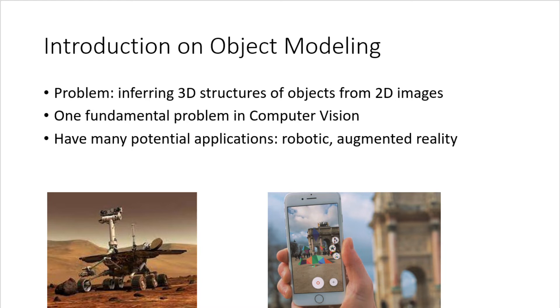For augmented reality, we want to overlay an augmented layer over the physical layer of the object, as shown in the figure. For example, we want to add some virtual object on the ground. By doing this, we need to know the 3D shape of the ground.